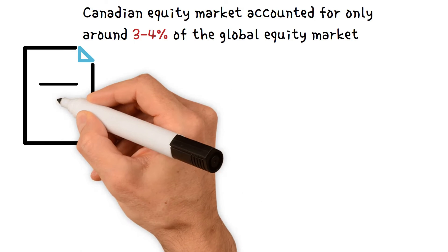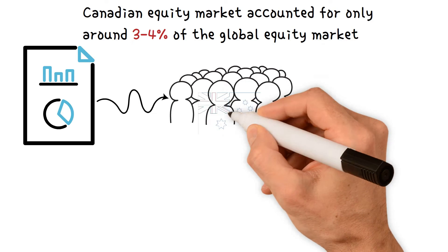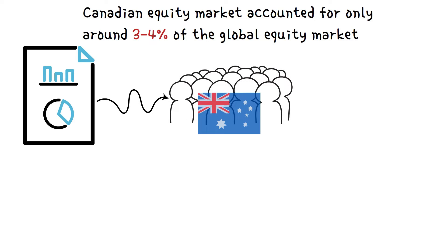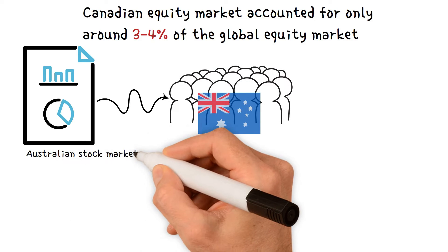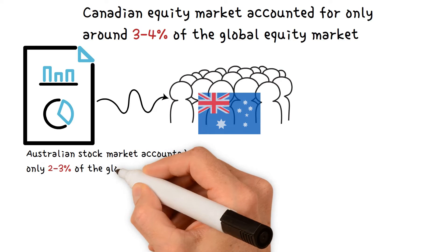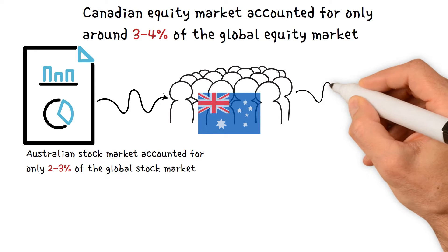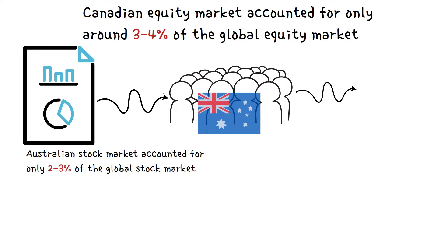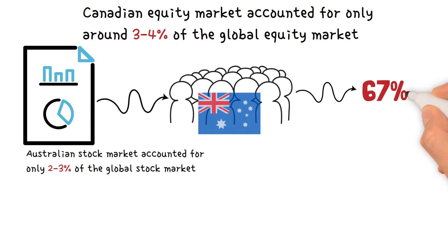The data is even more striking for Australian investors. Despite the fact that the Australian stock market accounted for only 2-3% of the global stock market, Australian investors, on average, allocated 67% of their portfolios to their domestic stock market.